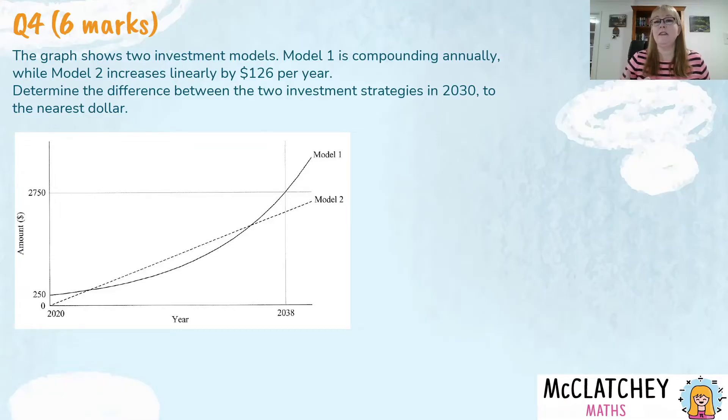Now this is a question that could be examined in year 11 under unit one when we look at simple interest and compound interest because this is what these two models are. Model one is compound interest. We're told that in the question it's compounding annually and model two is straight line investment which is simple interest and the amount of simple interest every year we're told is $126 per year. Now I guarantee you that word linearly probably confused a lot of students and it's all about understanding that compound is that exponential growth in a curve and that straight line growth is simple interest.